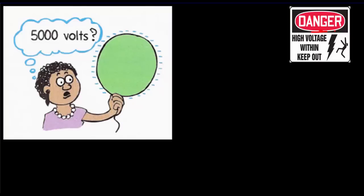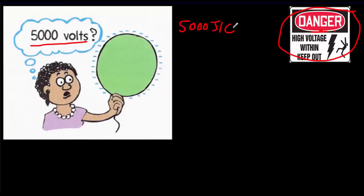Many people are very confused about voltage. A lot of that confusion comes from signs that say 'danger, high voltage,' typically referring to 500 or 1,000 volts. Most people are surprised to learn that if a child takes a rubber balloon and rubs it on their head for a couple of minutes, that balloon will acquire a voltage of about 5,000 volts — 5,000 joules per coulomb. Fortunately, there's nowhere near one full coulomb of charge on the balloon; typical charge would only be about a millionth, 10 to the minus 6 coulombs.